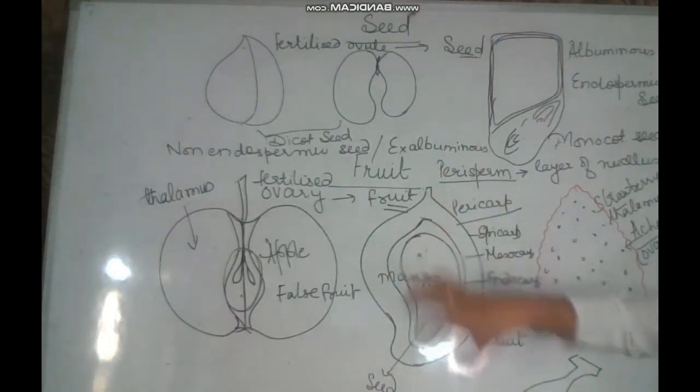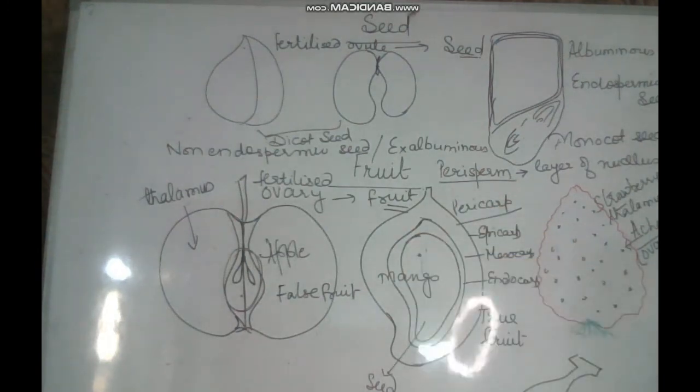Mango is representing an example of a fleshy fruit. There may also be dry fruits.